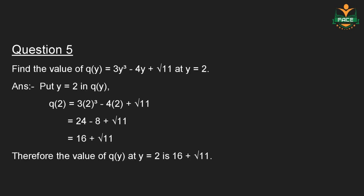Question number 5: Find the value of Q(y) is equal to 3y squared minus 4y plus root of 11 at y equal to 2. Put y equal to 2 in Q(y). Therefore, Q(2) is equal to 3 into 2 squared minus 4 into 2 plus root of 11, which is equal to 16 plus root of 11. Therefore, the value of Q(y) at y equal to 2 is 16 plus root of 11.